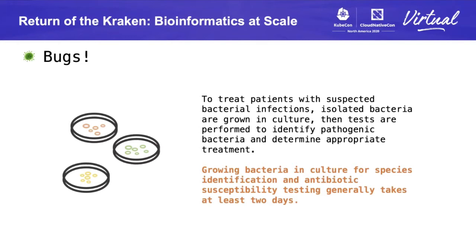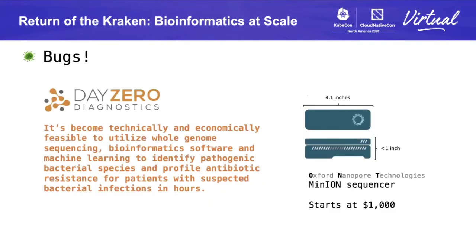However, it is now technically possible and economically feasible to instead sequence the DNA of the pathogenic bacteria and use that sequencing data along with bioinformatics software and machine learning to try to identify the organism causing an infection and determine what antibiotics that bacteria is susceptible to. For us at Day Zero, one of the technologies we use to do that is an Oxford Nanopore MinION sequencer. It starts at a thousand dollars and can produce a pretty significant amount of sequencing data in a few hours.